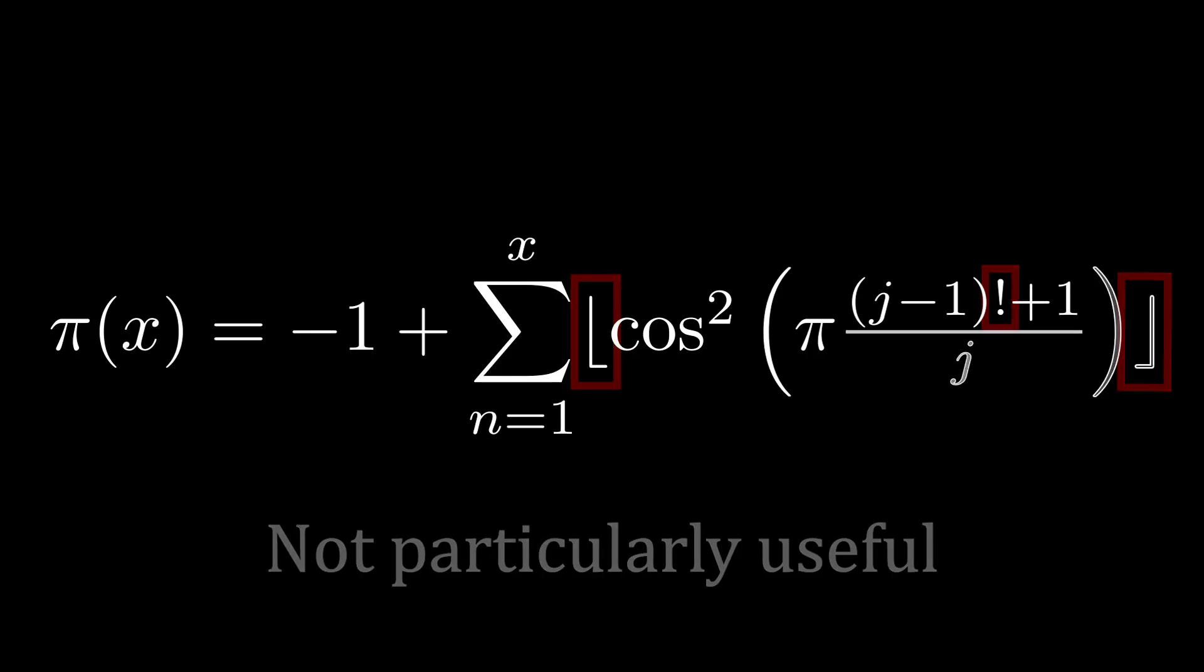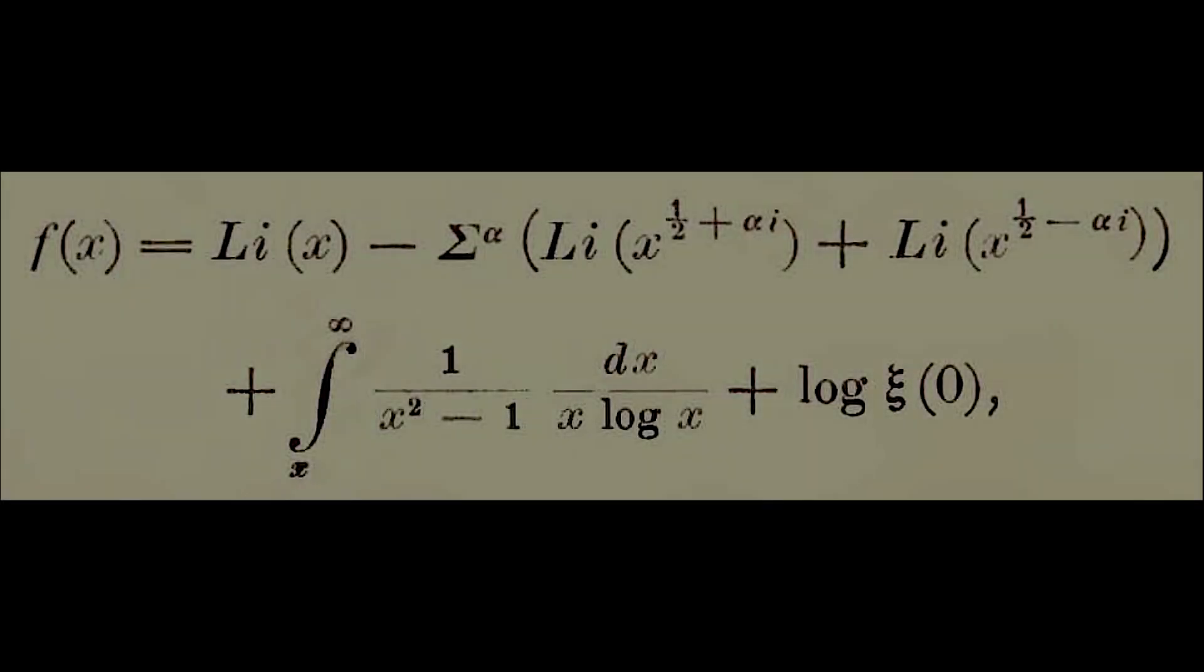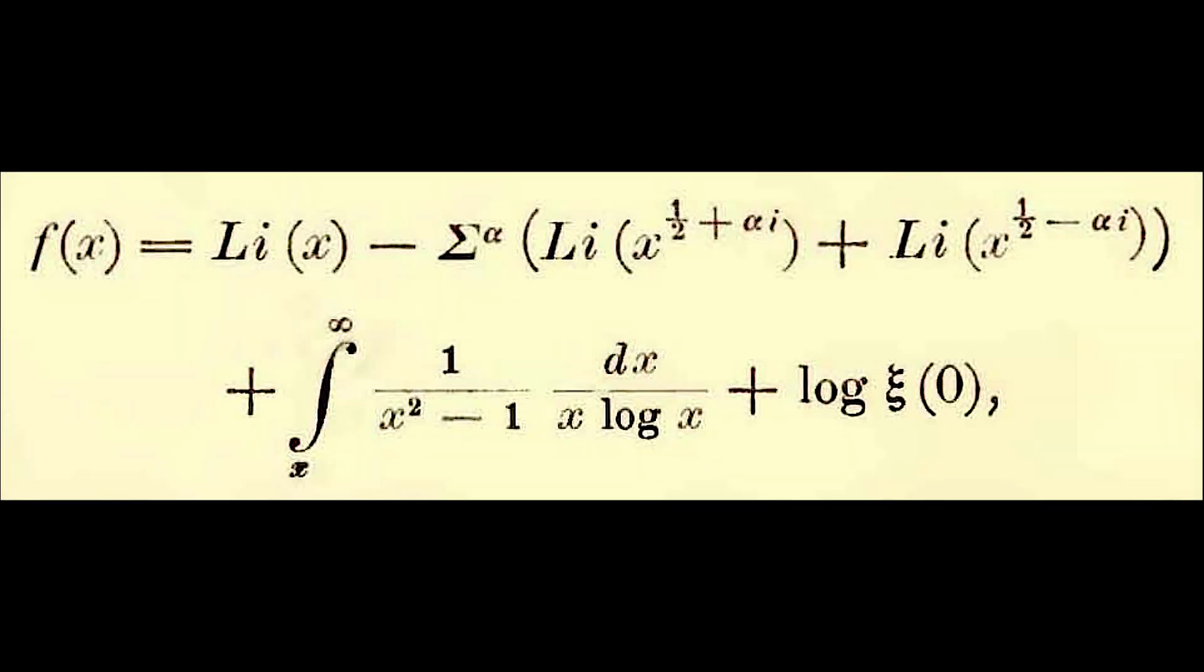This is where Riemann comes in. In his 1859 paper, Riemann discovers an interesting way to express a function which not only counts primes, but also prime powers.